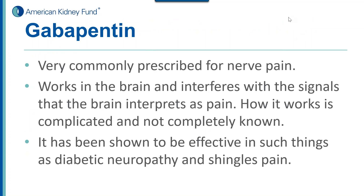Gabapentin is very commonly prescribed for nerve pain. It works in the brain and interferes with signals the brain interprets as pain, though it's not entirely clear exactly how. It was originally used as an anti-seizure medication. Because it works in the brain, it can have side effects such as making you sleepy and causing central nervous system effects. However, it has been shown to be very effective for diabetes and shingles pain. It doesn't numb the nerve itself but interacts with your brain chemistry to make your brain interpret pain as less.